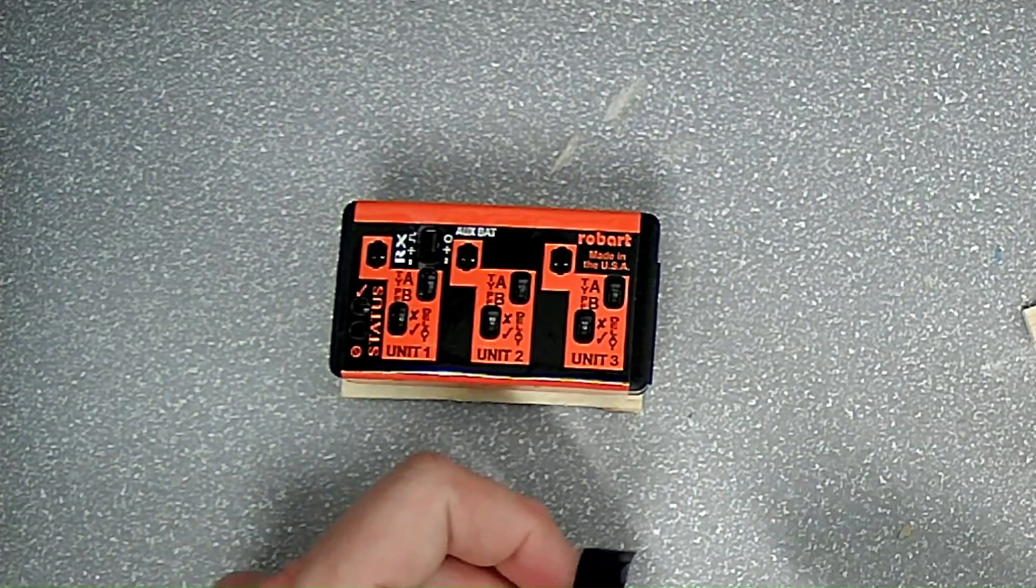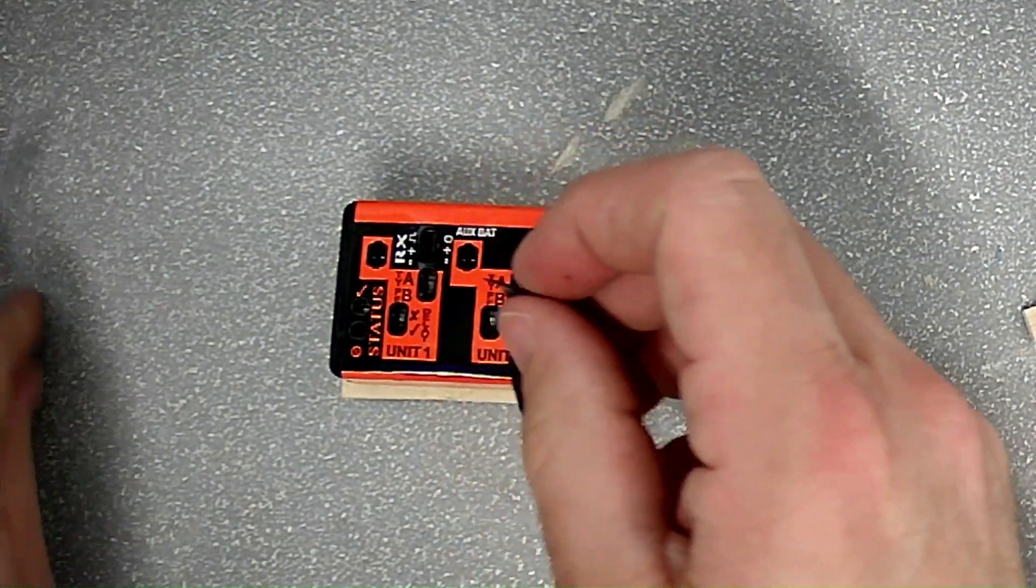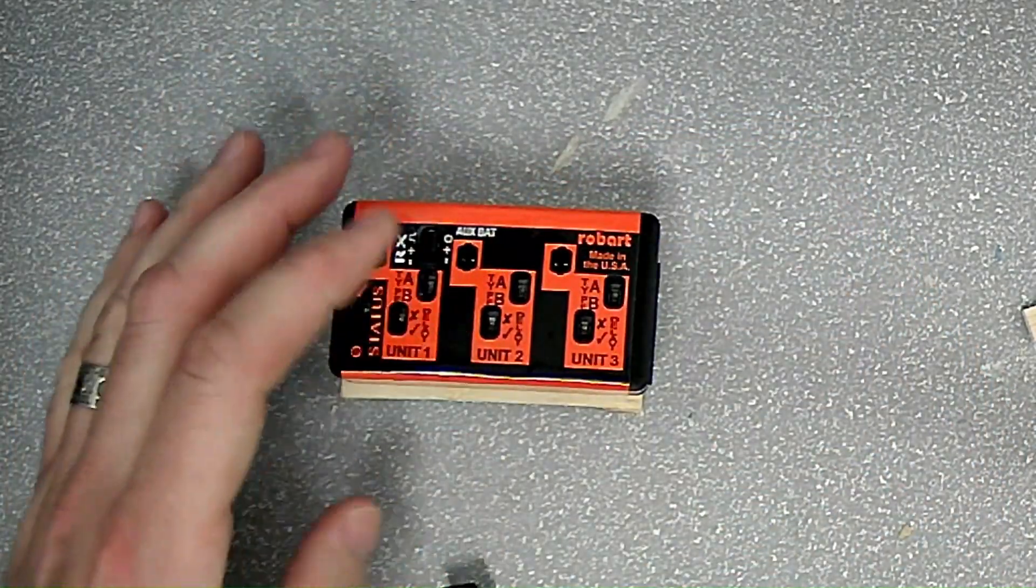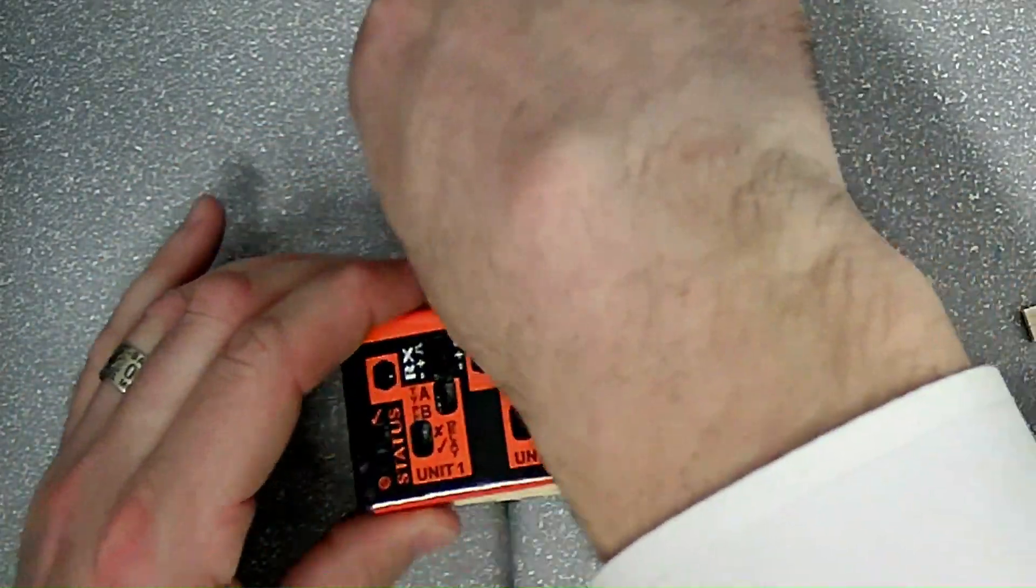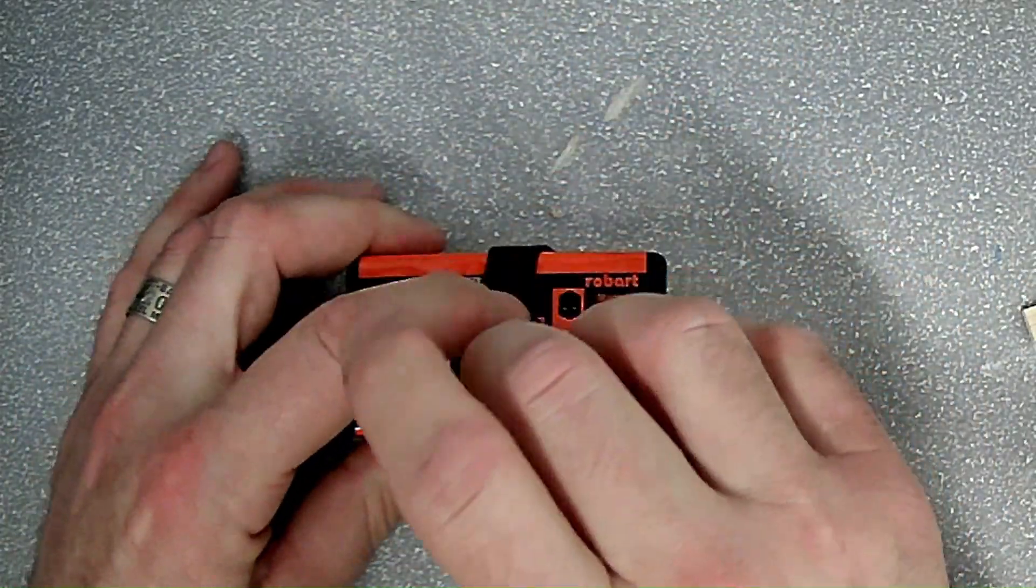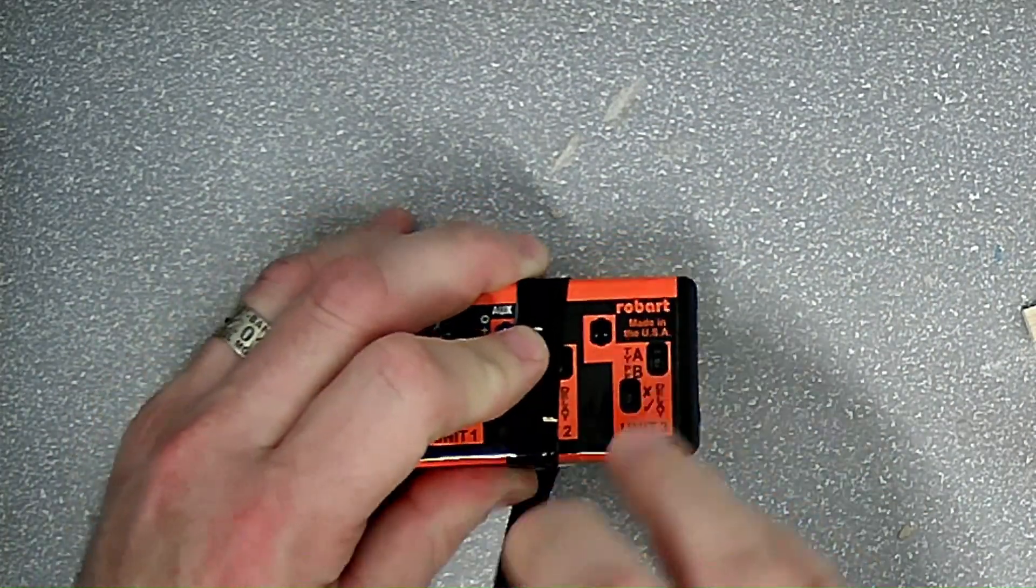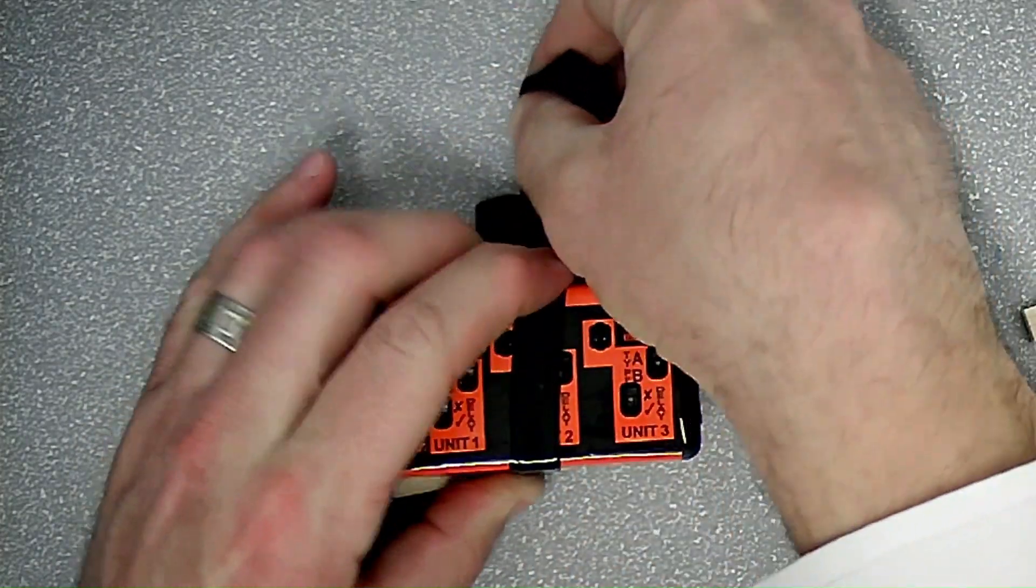Now I'm going to take the silicone tape that we cut half and half lengthwise, and we're going to run this under, back around, and then pull it tight. Clean up any extra.